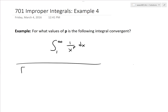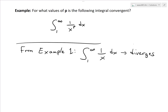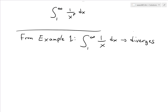From my earlier video in example 1, I already went over the case where p equals 1. I showed that the integral from 1 to infinity of 1 over x dx diverges — it just goes to infinity, so it does not converge. You can see that video in the link below in the description; I don't want to cover that again because I already solved it.